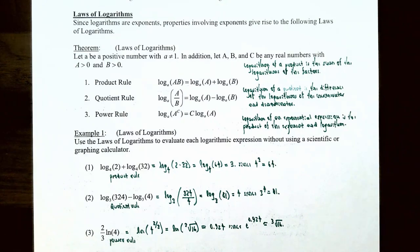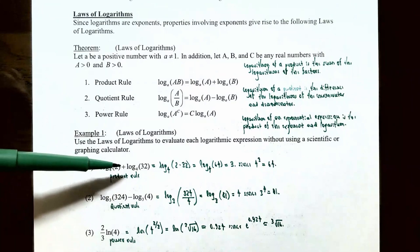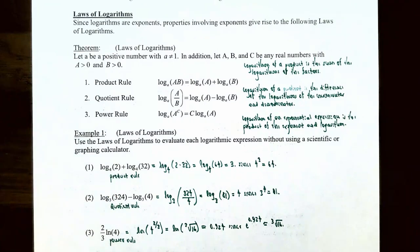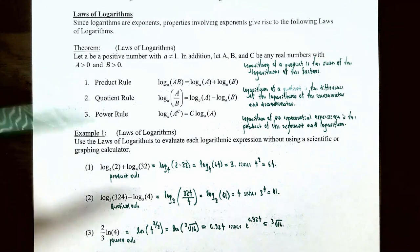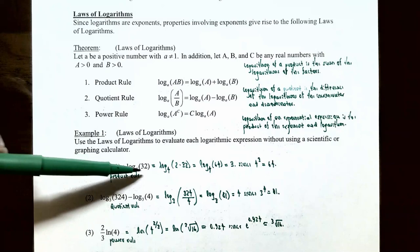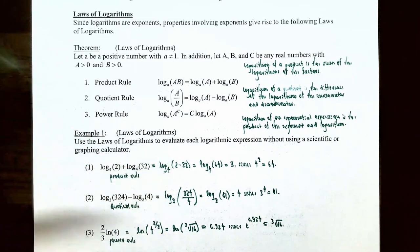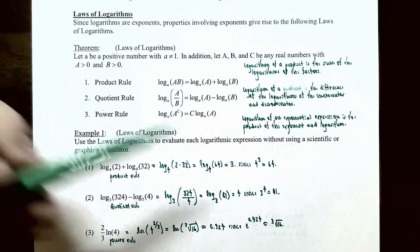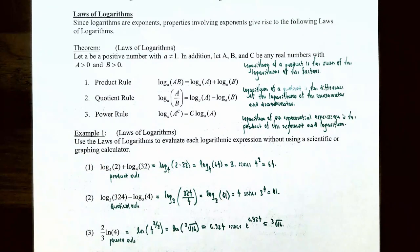Let's try out the laws of logarithms in example one: evaluate each logarithmic expression without using a calculator for the first two. Number one: log base 4 of 2 plus log base 4 of 32. You have a sum of two logarithms both with base 4, so use the product rule to combine them: log base 4 of 2 times 32, which is log base 4 of 64. Since 4 cubed is 64, the answer is 3.